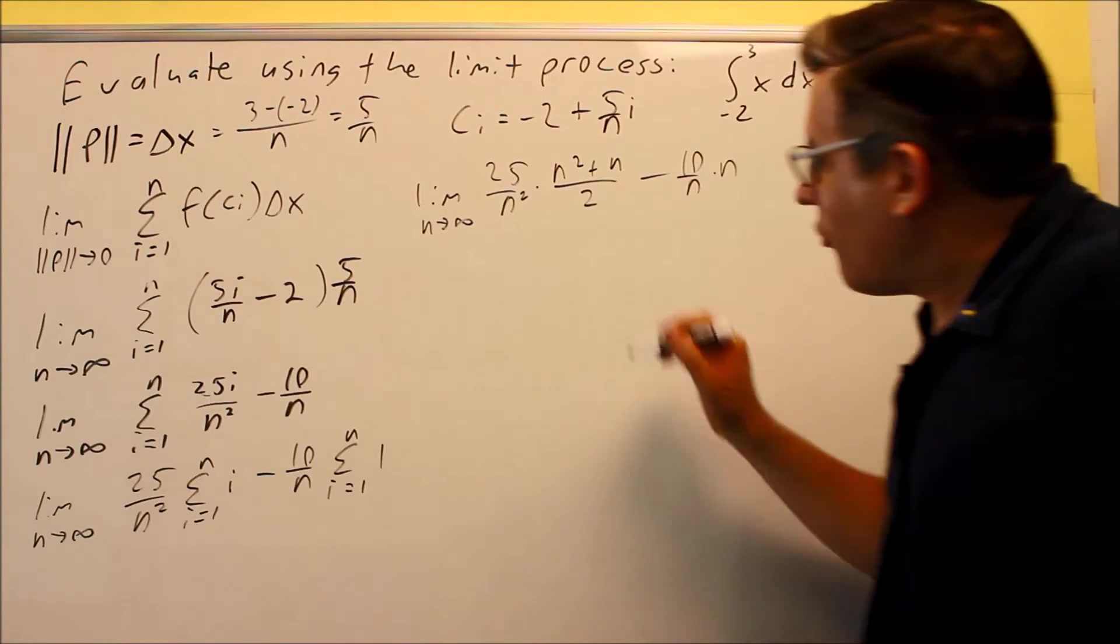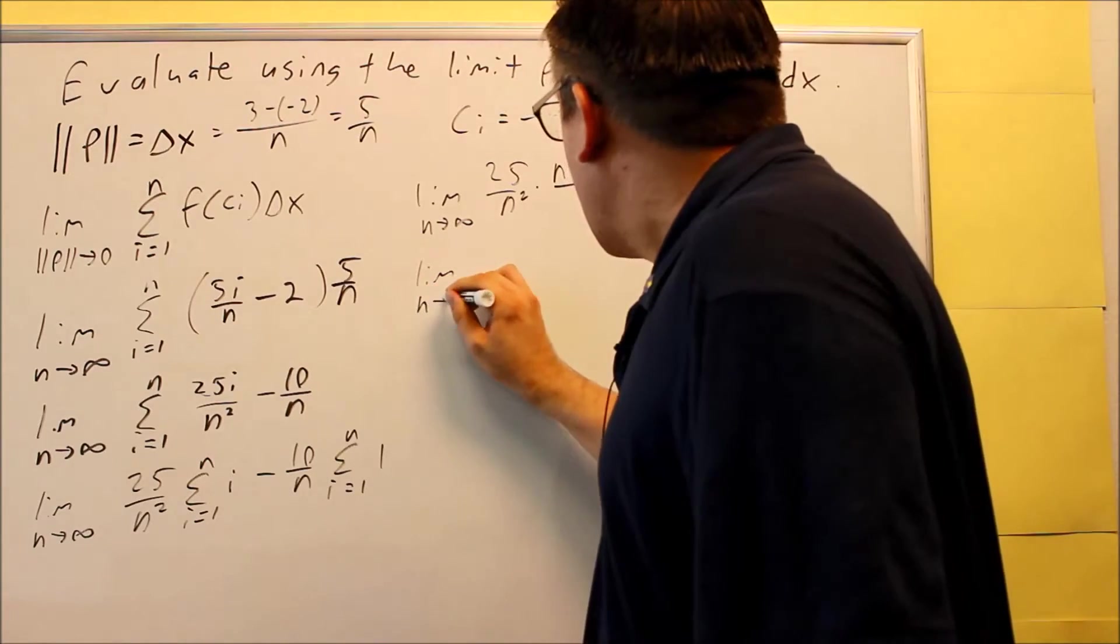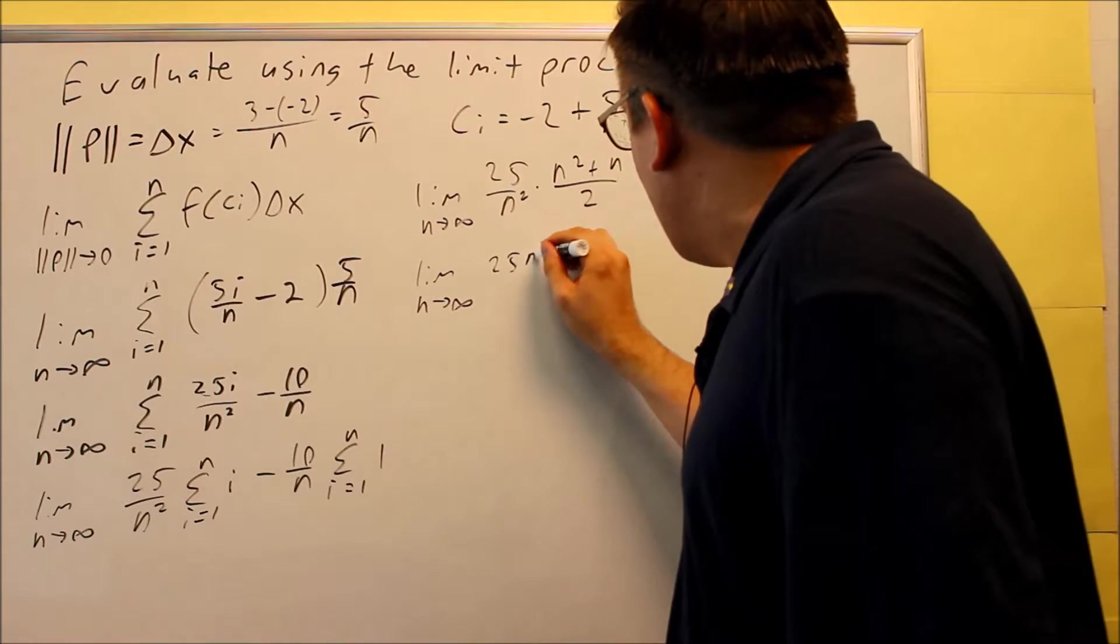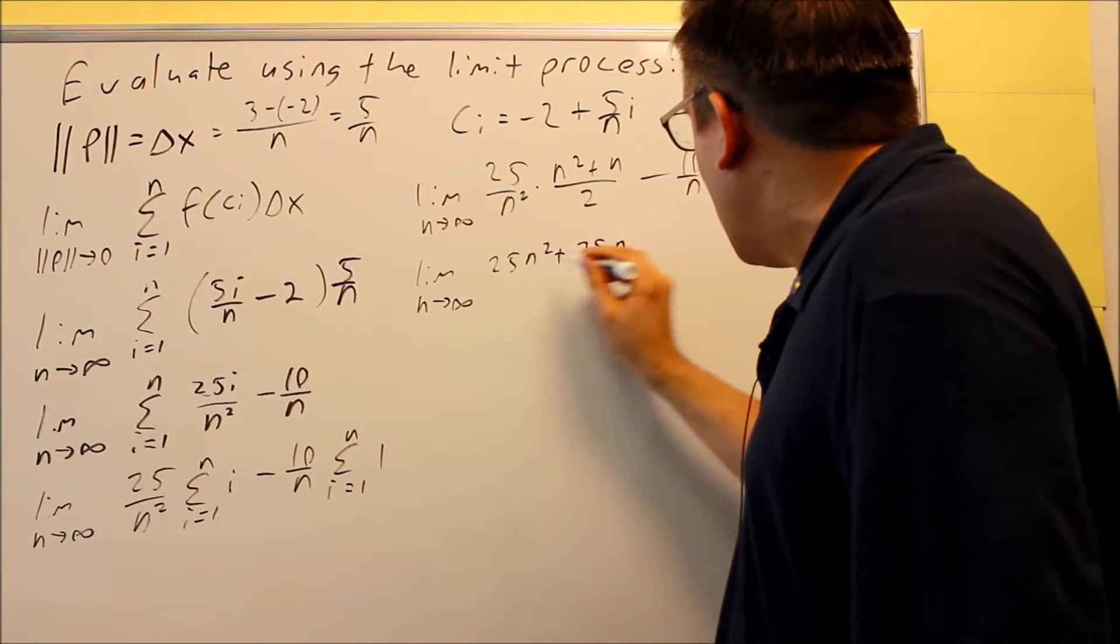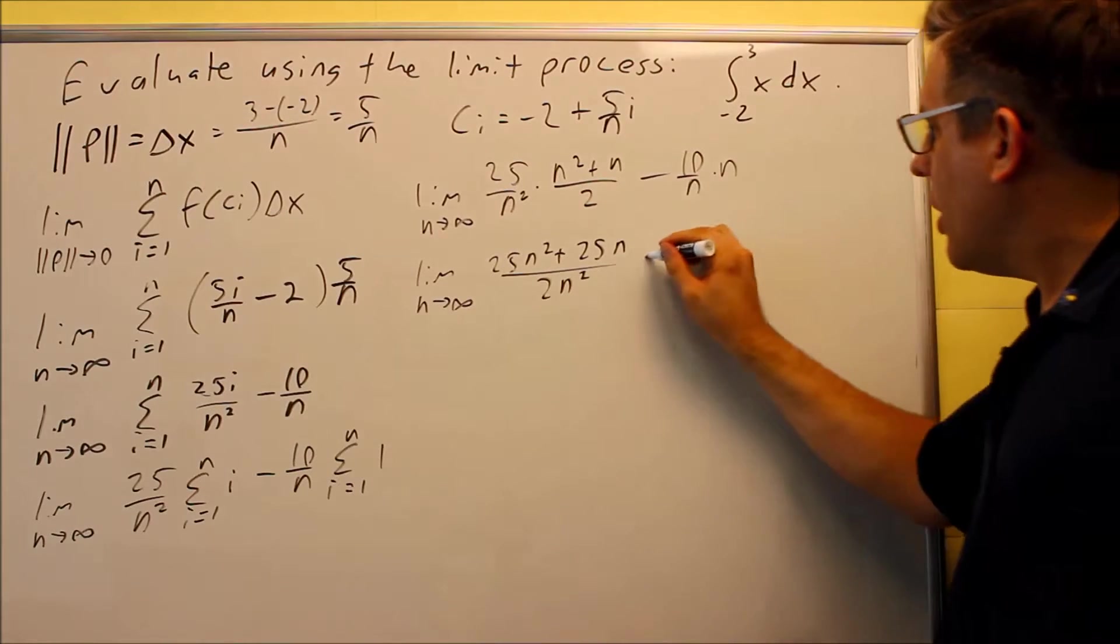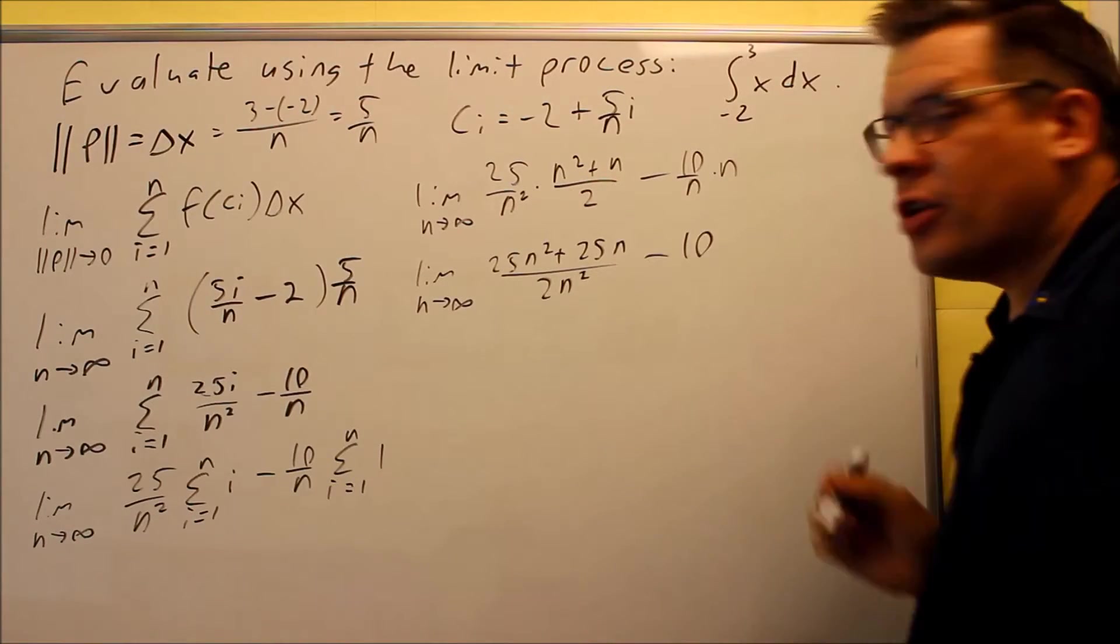Now, it's just a matter of simplifying it. Okay, so when we do that, we're going to multiply across the top, across the bottom. So, 25 n squared plus 25 n all over 2 n squared. And then, this, n's are going to cancel out and we're just going to minus 10.